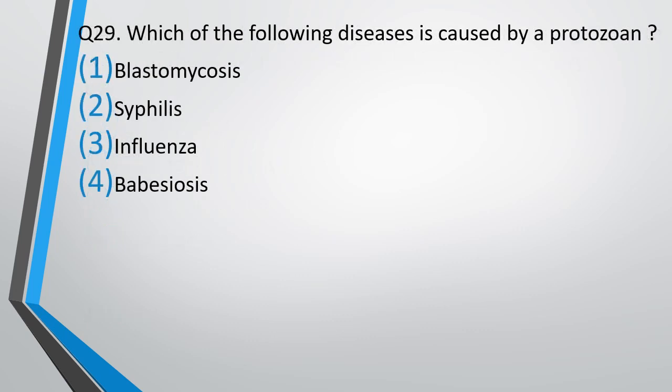Question No. 29. Which of the following diseases is caused by a protozoan? Blastomycosis, cephalis, influenza, or baby C (CIS). The correct answer is option 4, baby C (CIS).